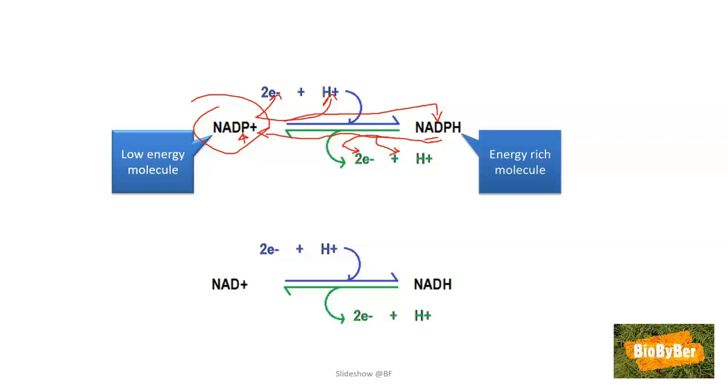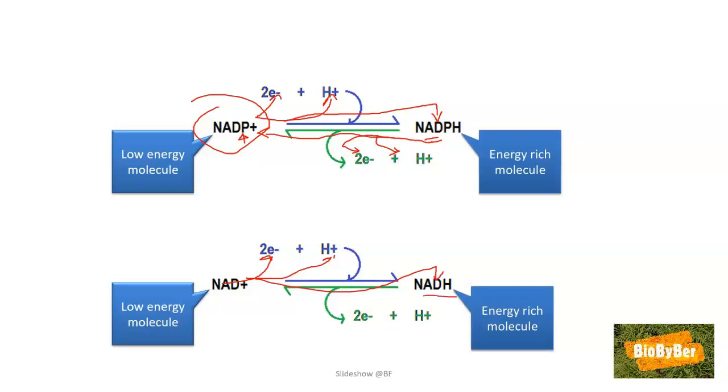We have the same scenario in respiration. The NAD plus which takes part in respiration is able to pick up two electrons and a proton and be converted into NADH, which is a high energy molecule. And the high energy molecule NADH can lose two electrons and a proton and be converted into NAD plus. This sounds rather complicated. We are particularly interested in NADP plus because we are interested in learning about photosynthesis.